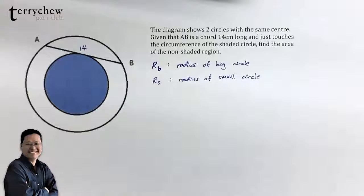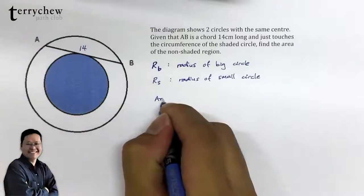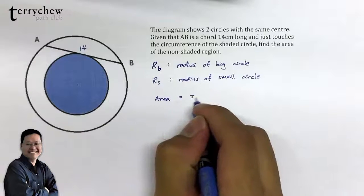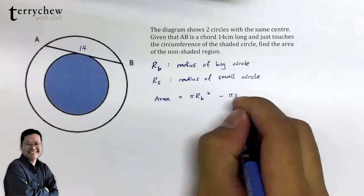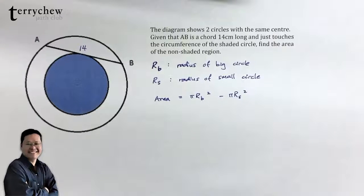So the area that we are looking for is pi times RB squared, which is the area of the big circle, minus pi times RS squared, which is the area of the small circle.